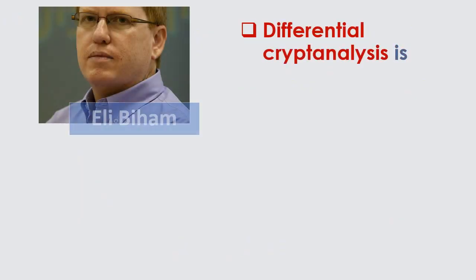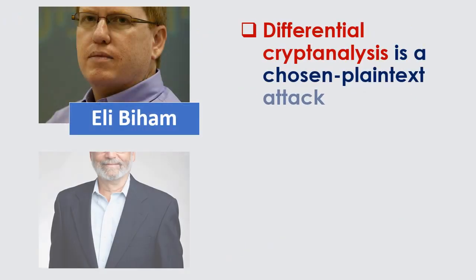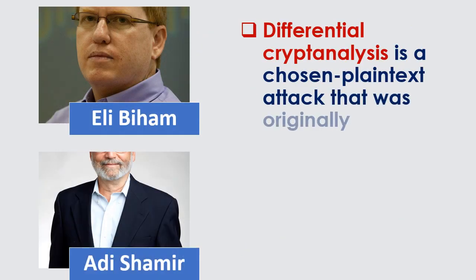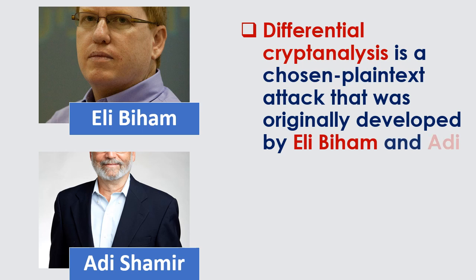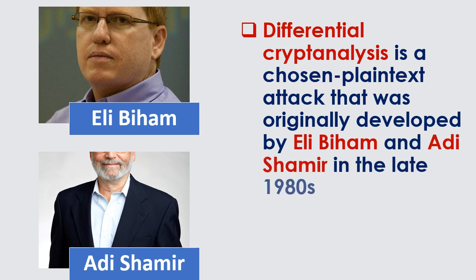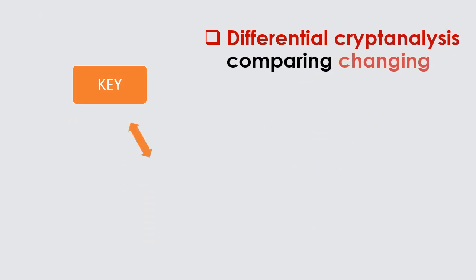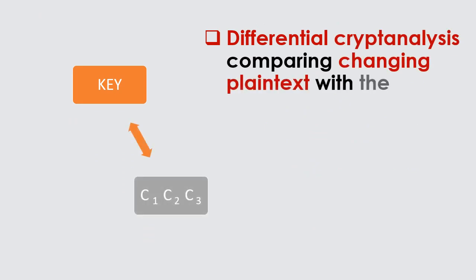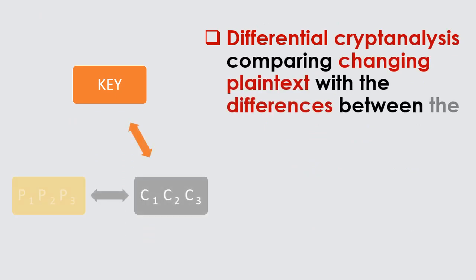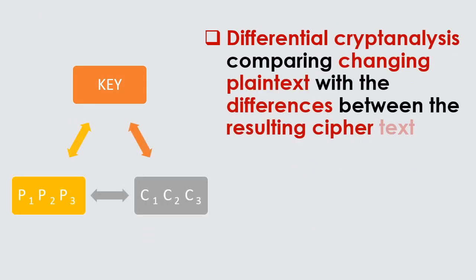Differential cryptanalysis is a chosen plaintext attack that was originally developed by Eli Biham and Adi Shamir in the late 1980s. Differential cryptanalysis works by comparing changing plaintext with the differences between the resulting ciphertext.